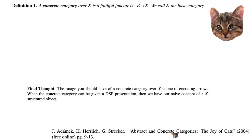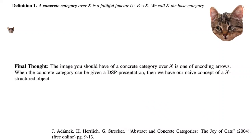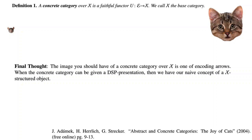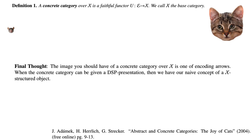As a final thought, the image you should have of a concrete category over x is one of encoding arrows. When the concrete category can be given by a data-structure-properties presentation, we regain our naive concept of an x-structured object.